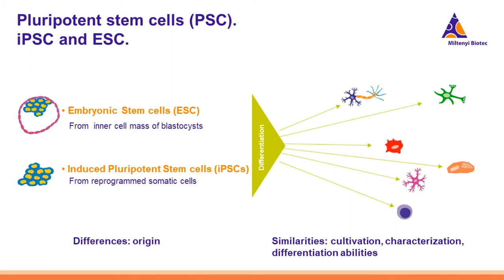In regard to differentiation potential, they show similar properties and can both give rise to cells that derive from the three embryonic lineages: ectoderm, mesoderm, and endoderm.